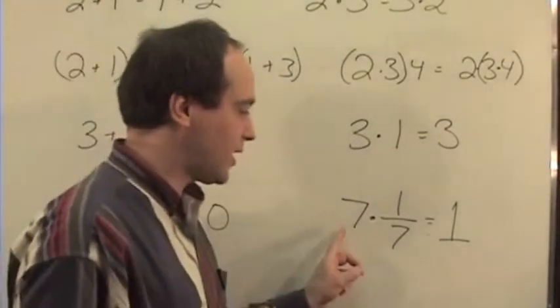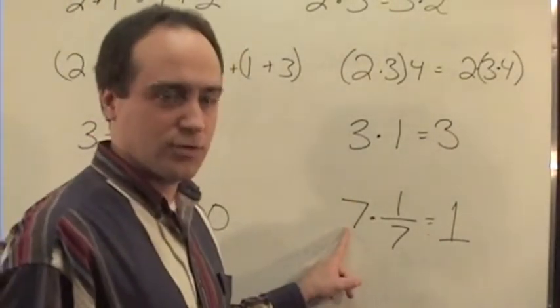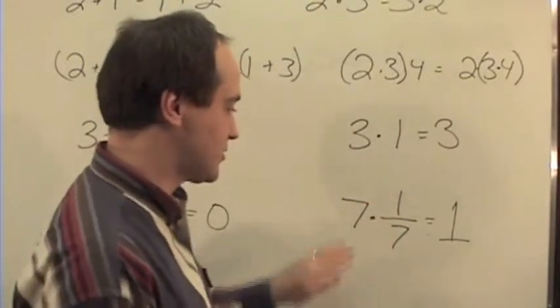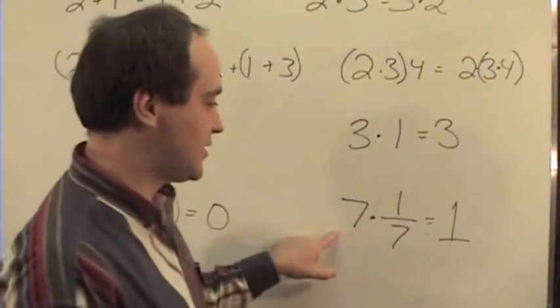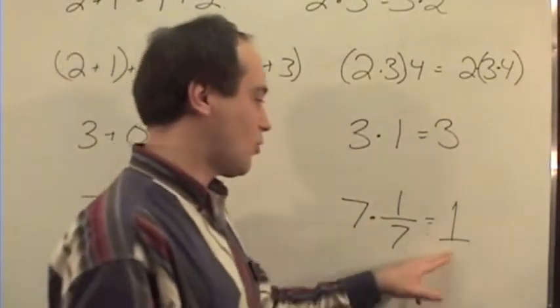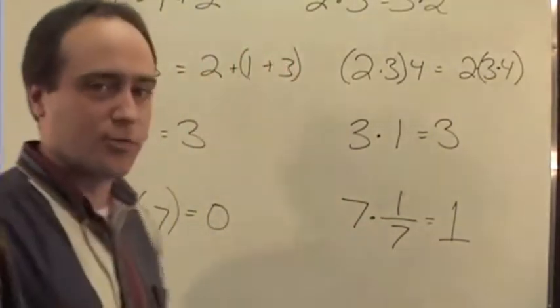And if you multiply a number by its inverse, which is 1 divided by that number, so the inverse of 7 is 1 seventh. 7 times 1 seventh is 7 divided by 7, or is 1, and that's the inverse property.